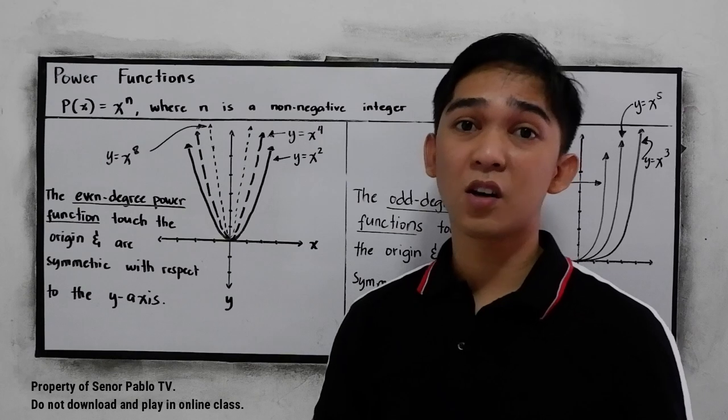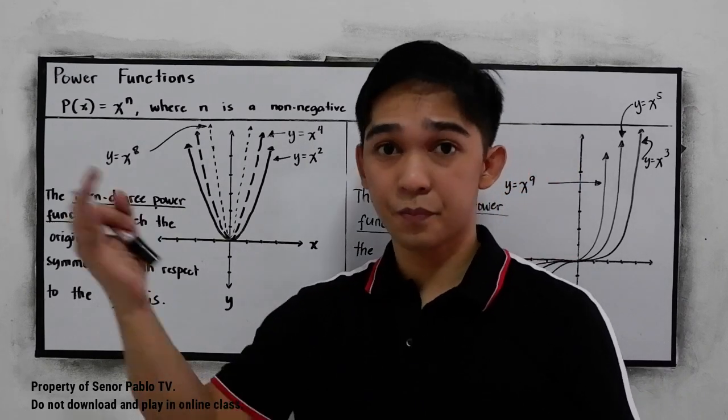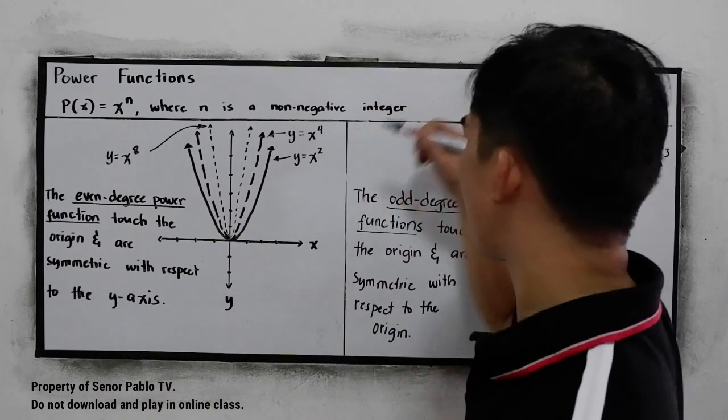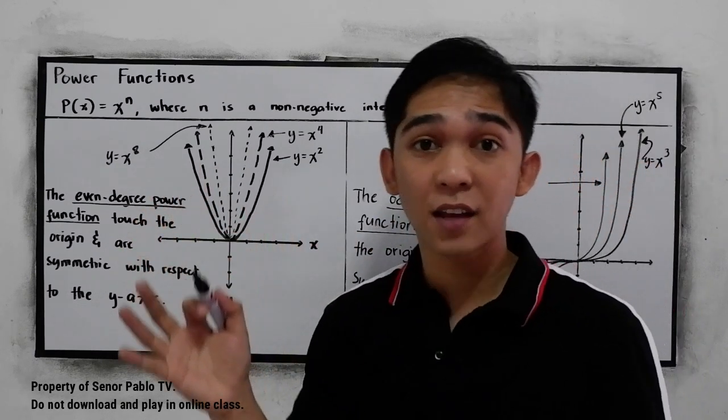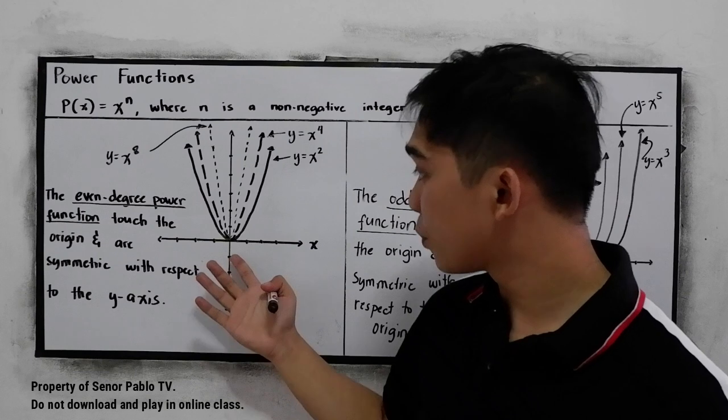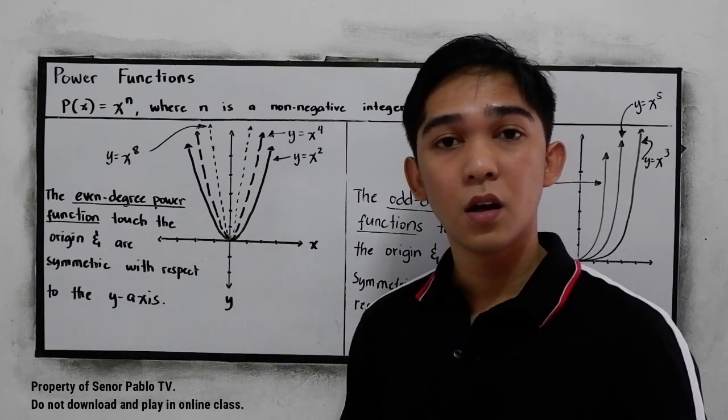So maybe you encountered in your discussion, we have y = x^2. Then you graph that function, and you come up with this one.